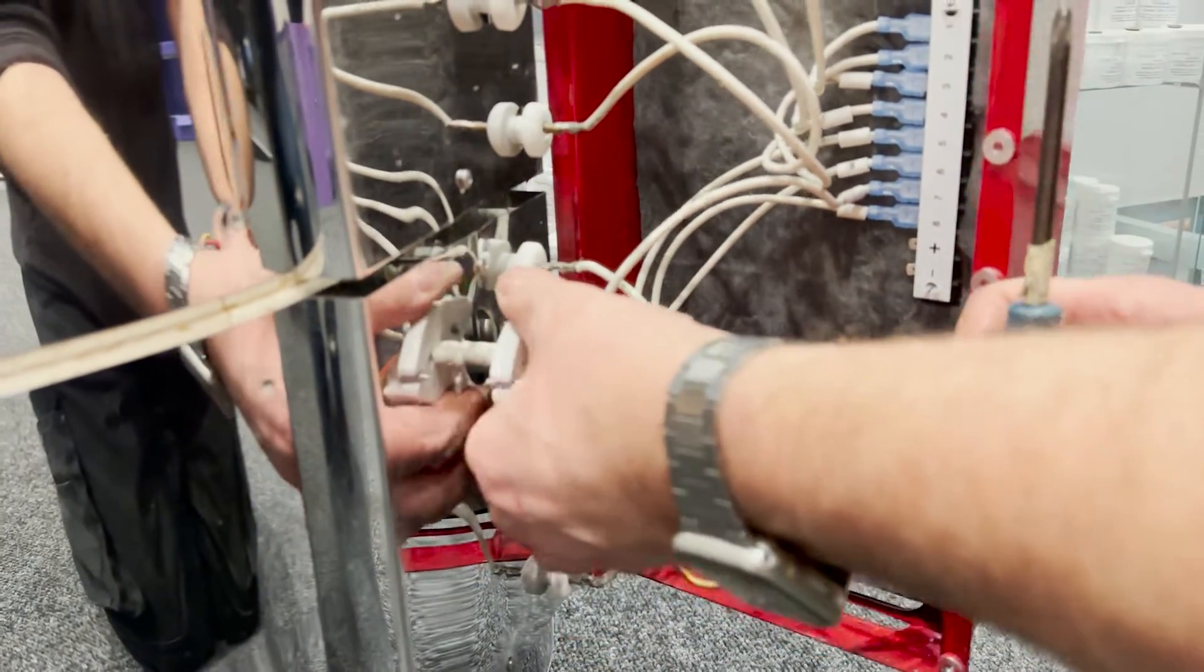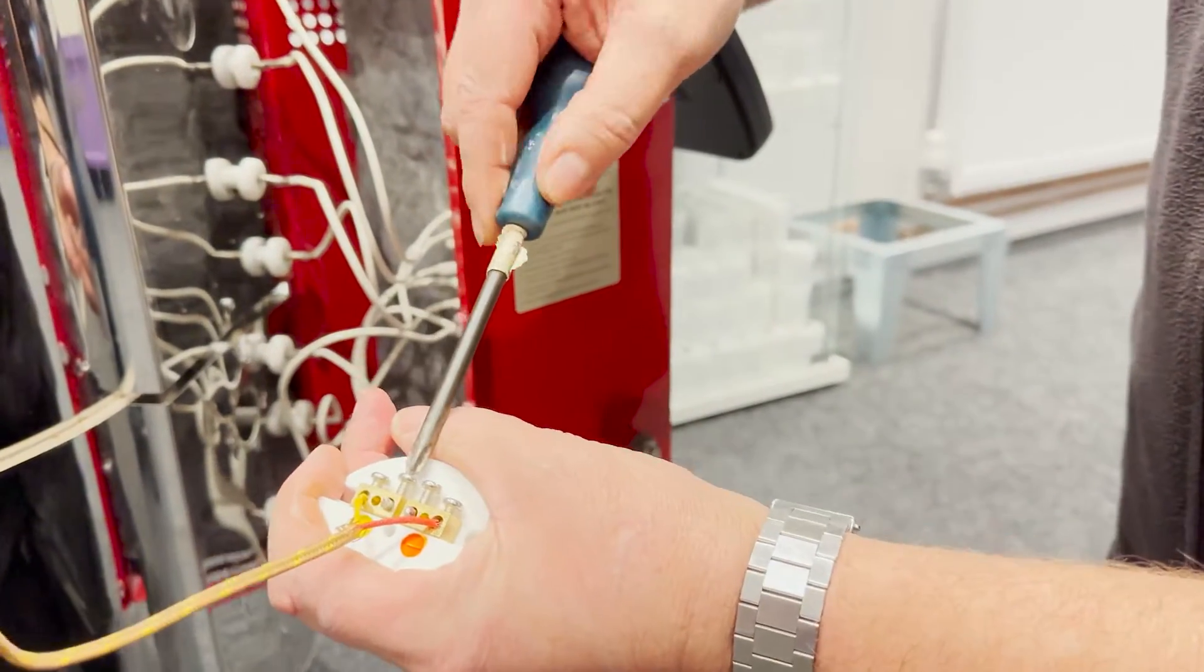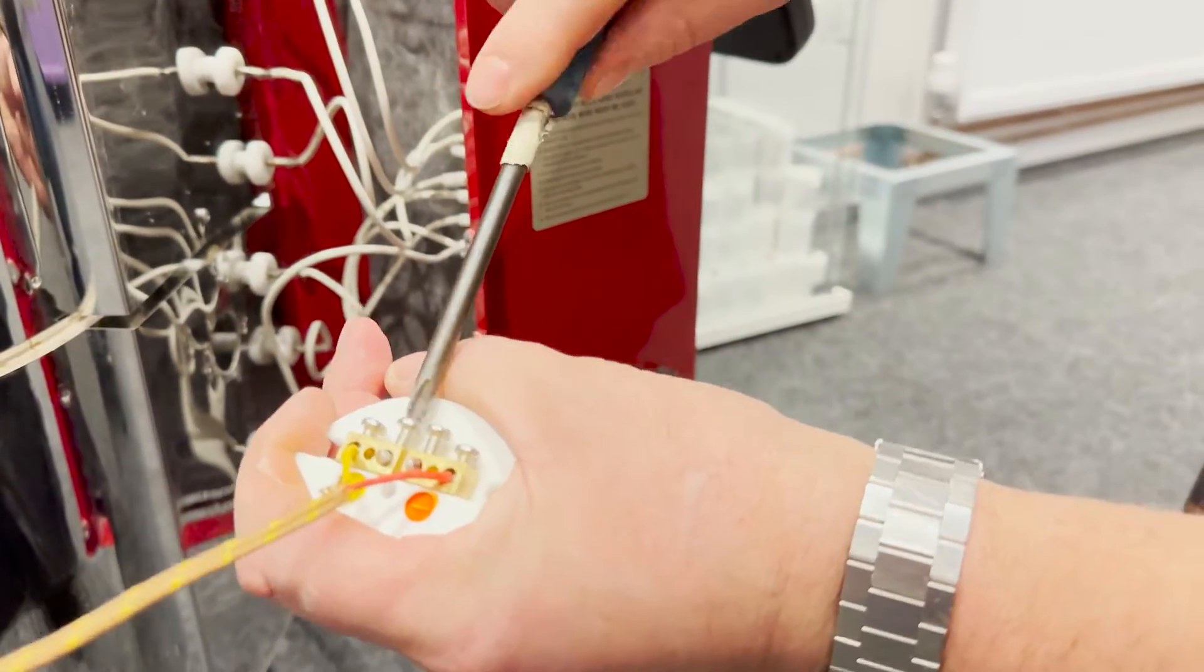All you need to do then is loosen the two screws holding the thermocouple in place and the thermocouple will just slide out.